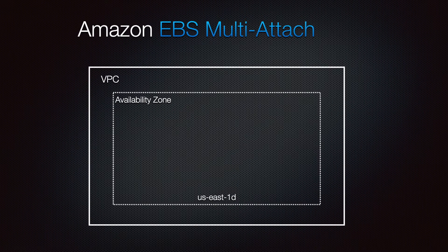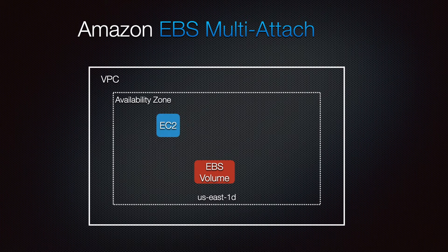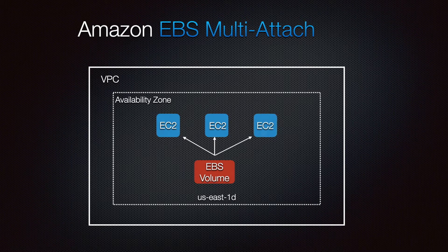What is EBS Multiattach? I created a volume and attached it to one EC2 instance. Then I attached the same volume to a second instance, and then to a third. Everything has to be in the same availability zone.